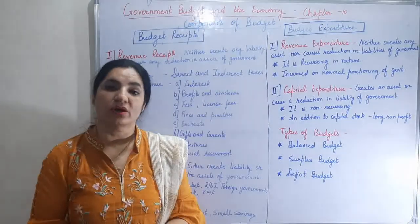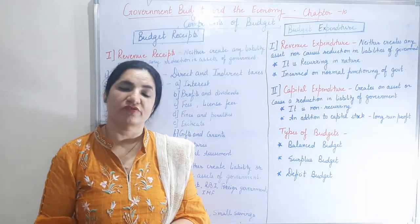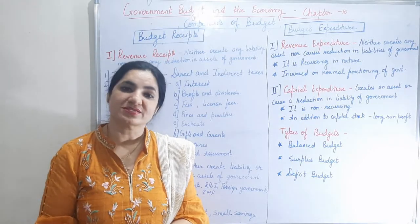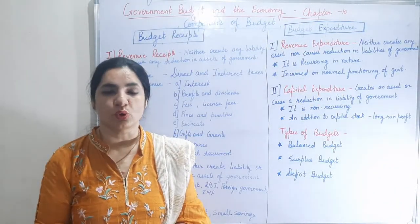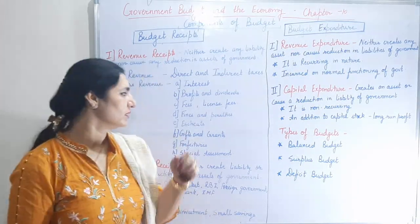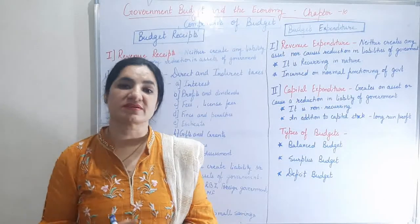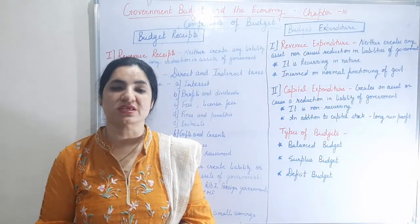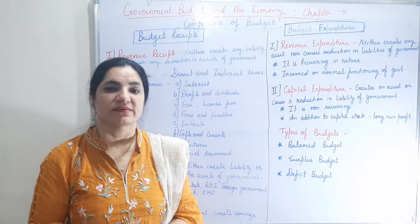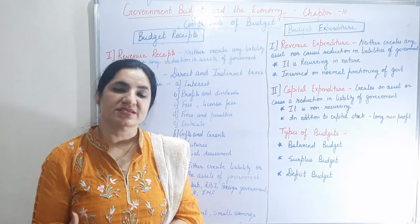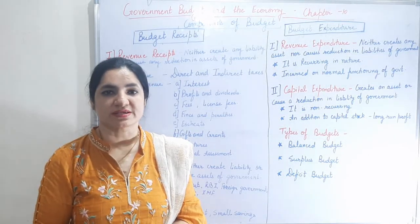Second is profits and dividends. Government has shares or ownership in many public enterprises controlled and managed by it, such as the railway department. Profit received from these enterprises is counted under this head. Third is fees and license fees. Fees means the amount received by government administrative departments for providing various services — like when we register cases in courts, or go to the RTO for a driving license.